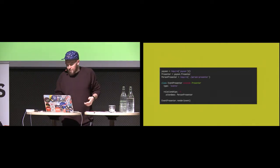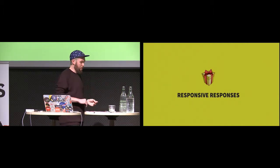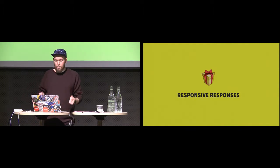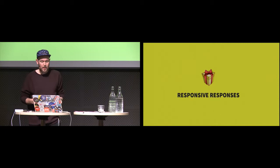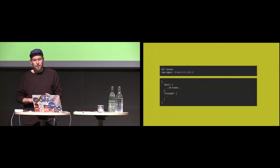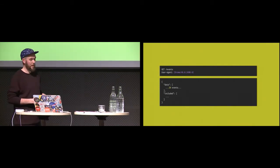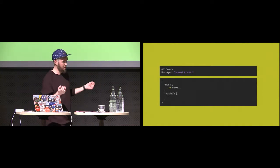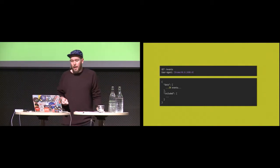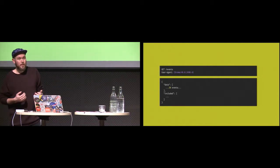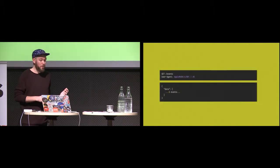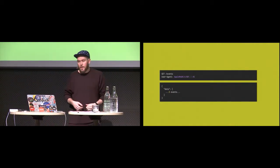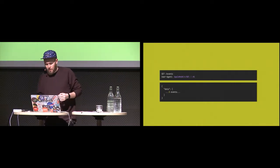Another cool thing: because the client is supposed to understand what it gets back without being told, you have the option to change the response on the server. For a simple example, maybe for a desktop user agent we return a lot of events, but for a mobile phone we only return five events — and this can be changed without the clients having to be updated. I think you understand where I'm going with that.